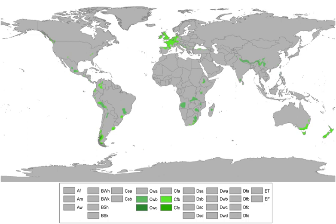An oceanic climate, also known as a marine or maritime climate, is the Köppen classification of climate typical of west coasts in higher middle latitudes of continents, and generally features mild summers and mild winters, with a relatively narrow annual temperature range and few extremes of temperature, with the exception for transitional areas to continental, subarctic and highland climates.